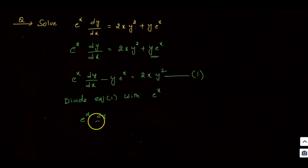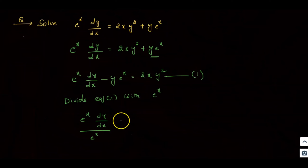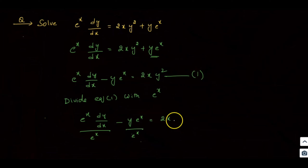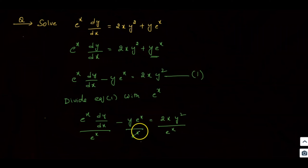After dividing by e^x: e^x · dy/dx divided by e^x, minus y · e^x divided by e^x, is equal to 2xy² divided by e^x. The e^x terms cancel.